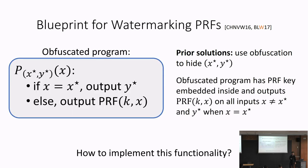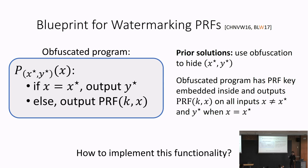Prior solutions take the program that at x equals x* computes y*, and otherwise outputs the real value of the function, then apply indistinguishability obfuscation. By appealing to the security of the obfuscation scheme, it is possible to argue that x* and y* are completely hidden from the adversary — in fact, this program is indistinguishable from one that just implements the PRF.